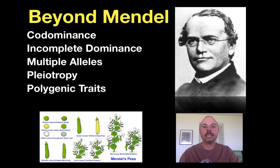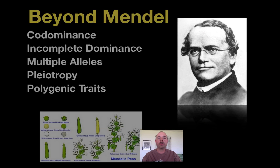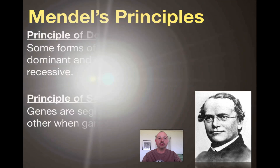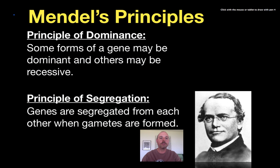Before we do that, I think it's really important that we go back and talk about the principles that Mendel gave us following his research and discoveries in the 1800s using pea plants — two of them specifically: the principle of dominance and the principle of segregation.